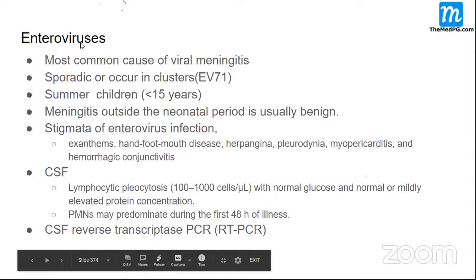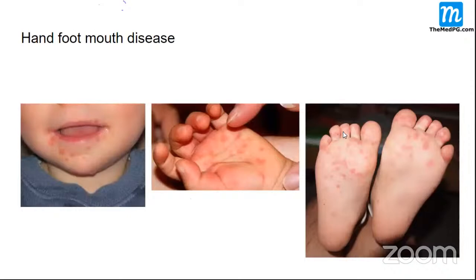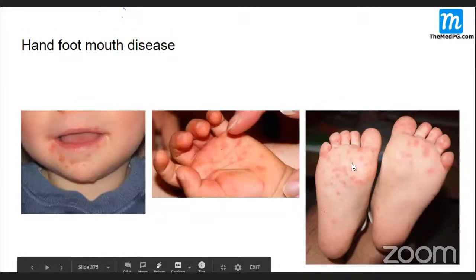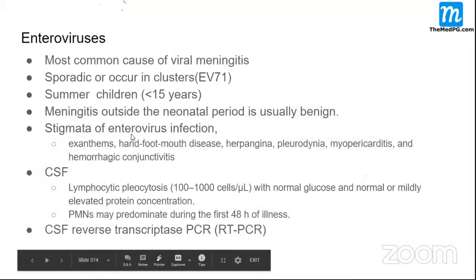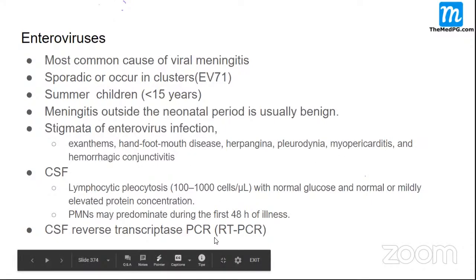Enteroviruses are the most common cause of viral meningitis. They can occur in clusters or sporadically, more commonly in children under 15 years, and predominantly in summer. Meningitis outside the neonatal period is usually benign — some patients can be managed on an outpatient basis. Associated features include hand-foot-mouth disease, myopericarditis, exanthem, and hemorrhagic conjunctivitis, pointing towards enteroviral meningitis.